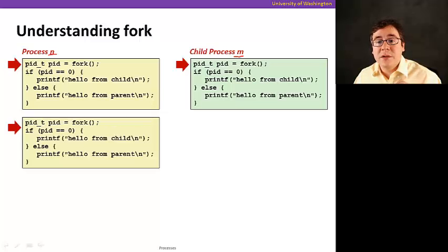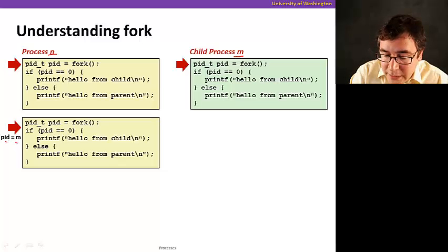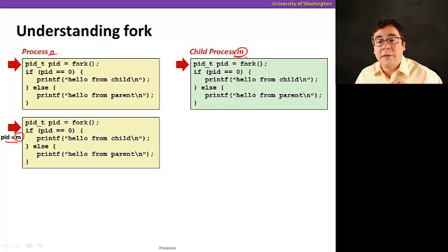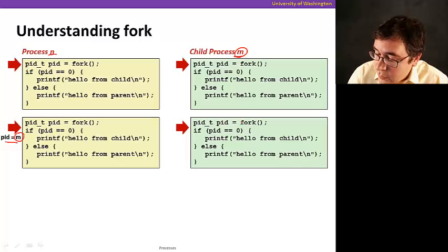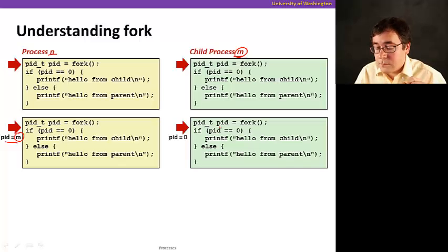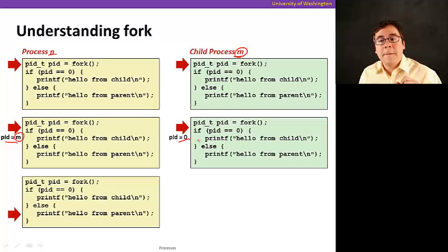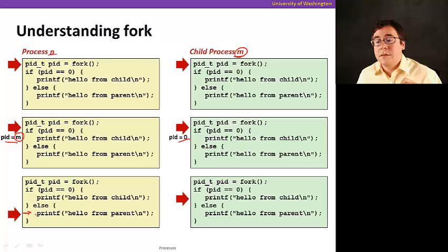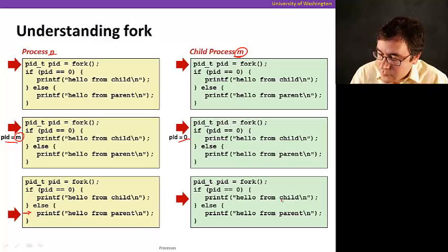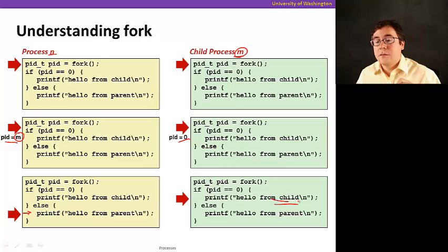So now process N continues executing, so it's going to receive PID. The PID is going to receive M, which is the ID of the child process. And now the child process is running, and it's going to receive zero. So now since process N received M, it's going to execute this side of the if.